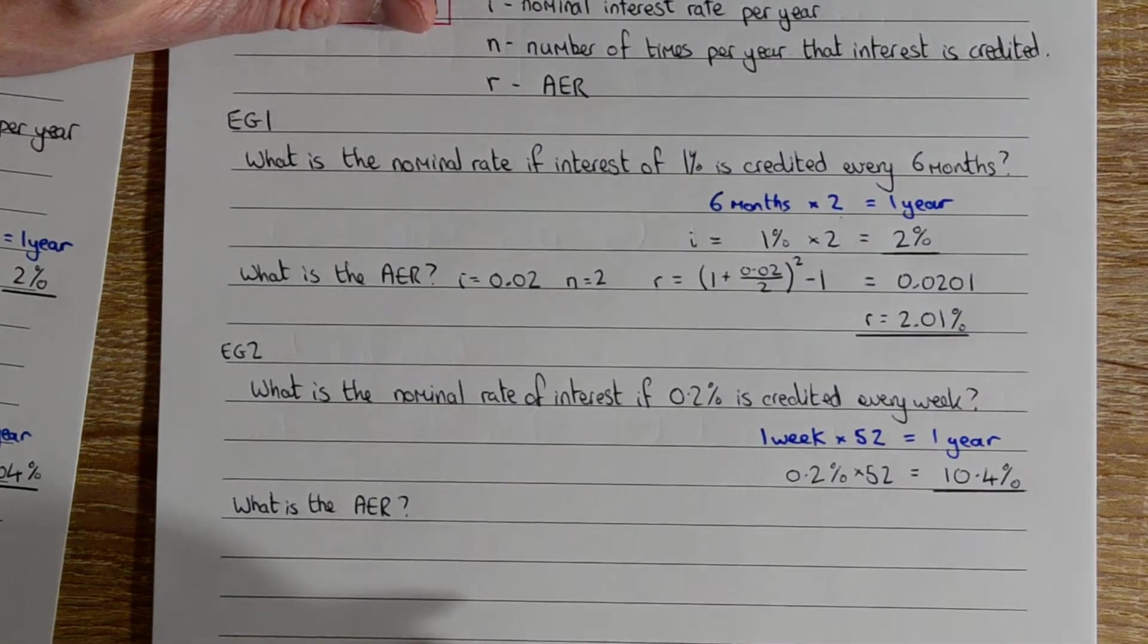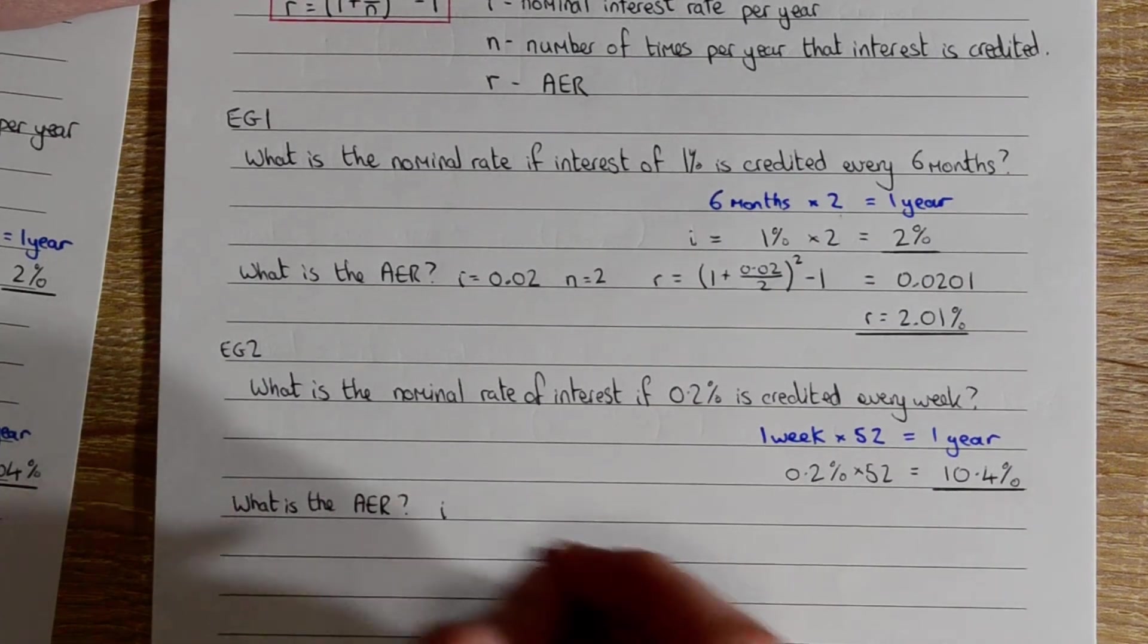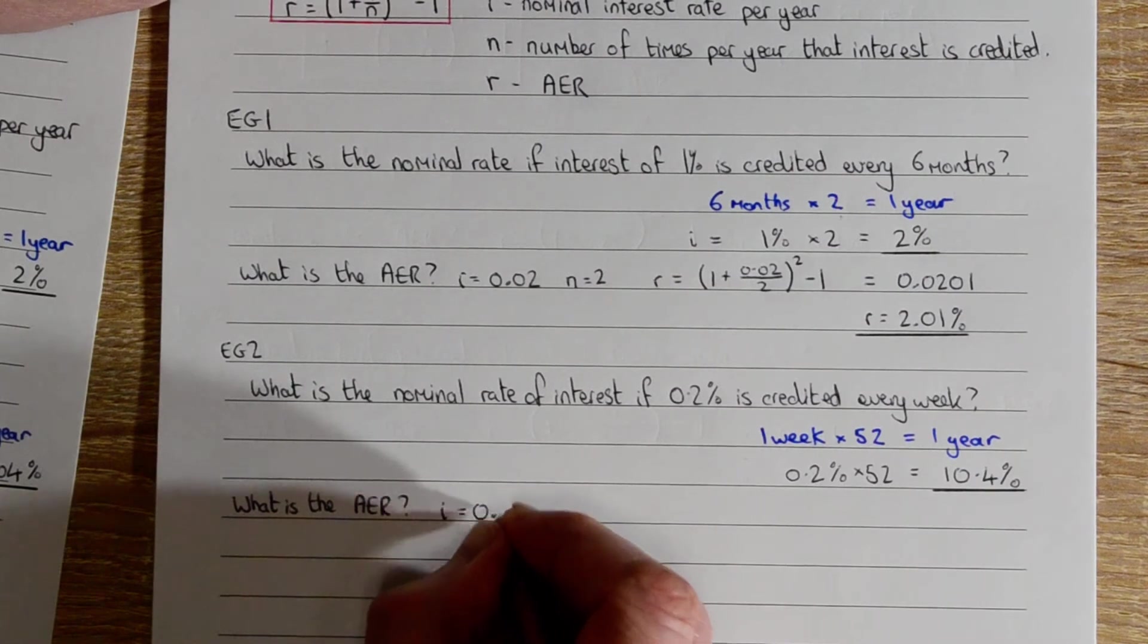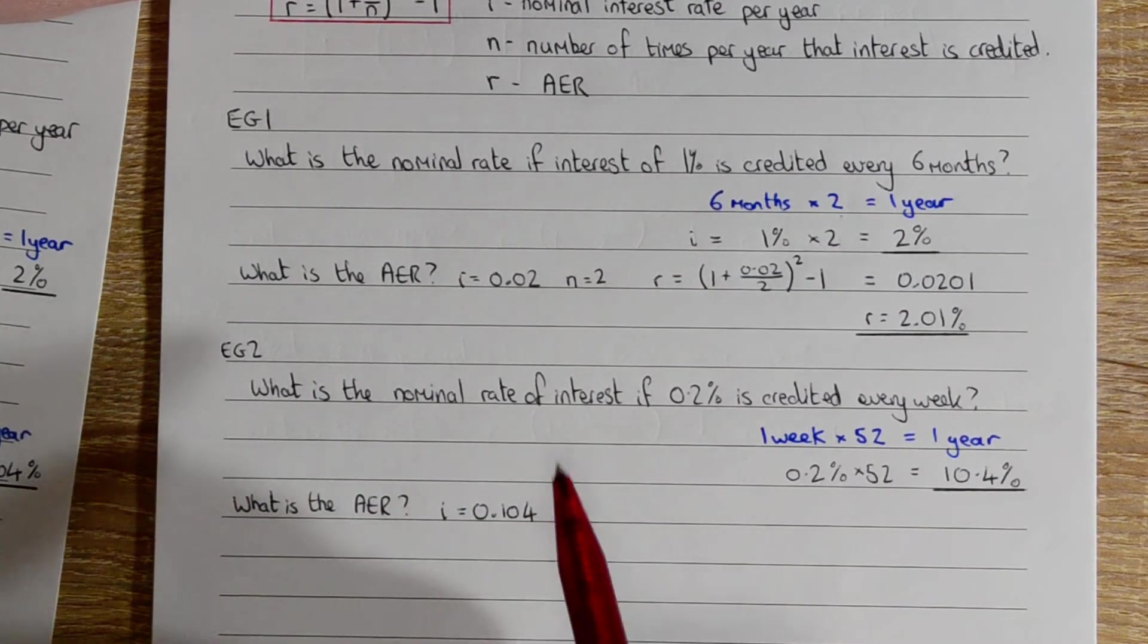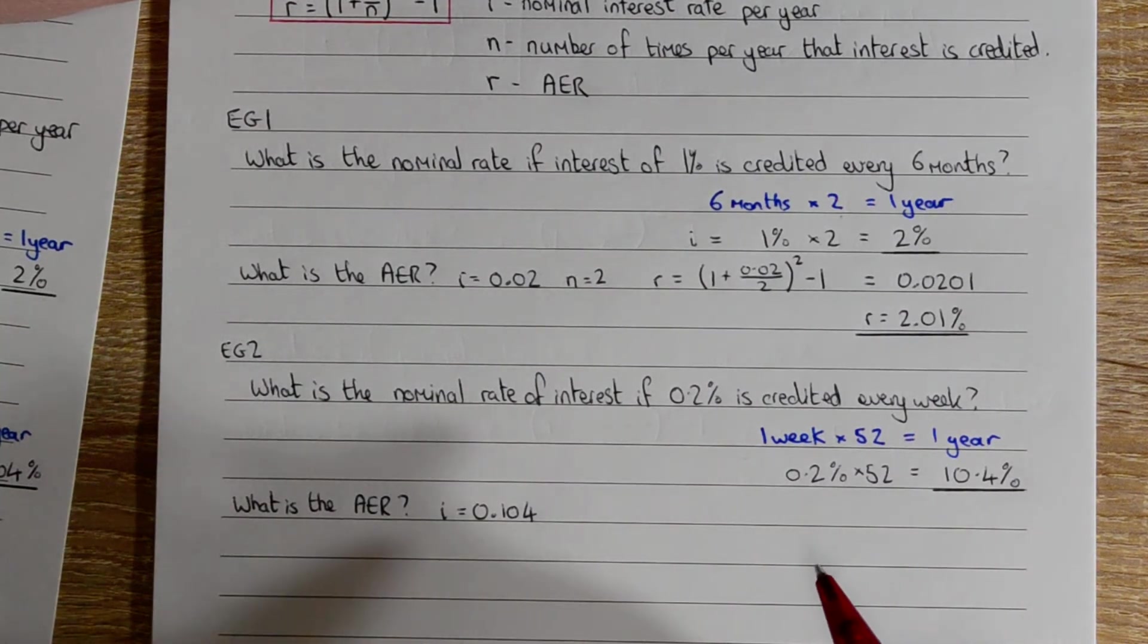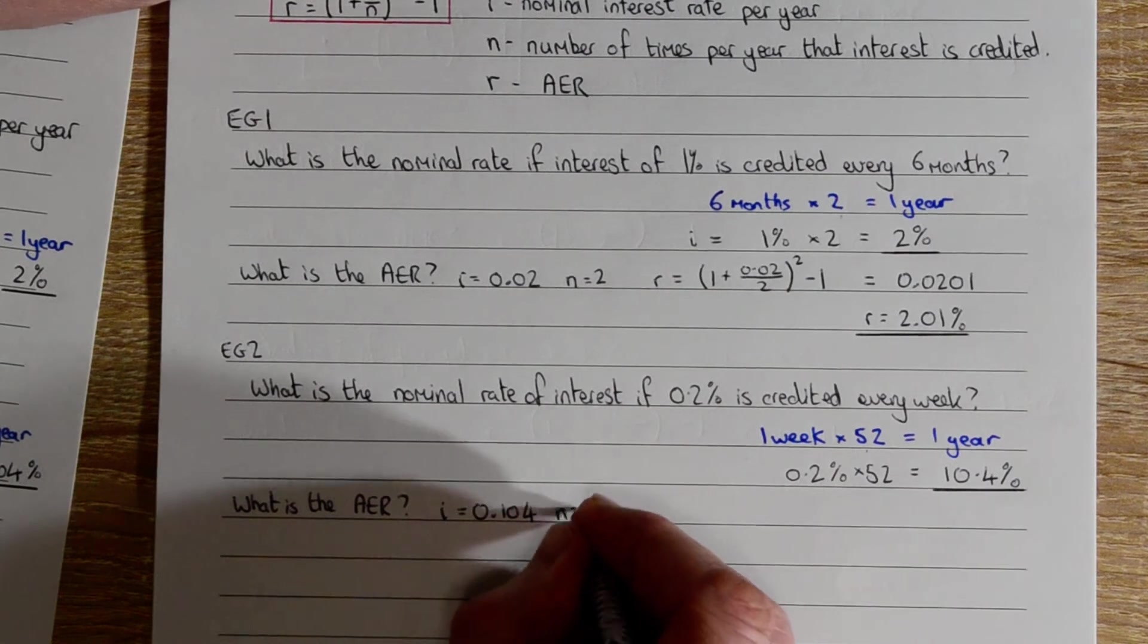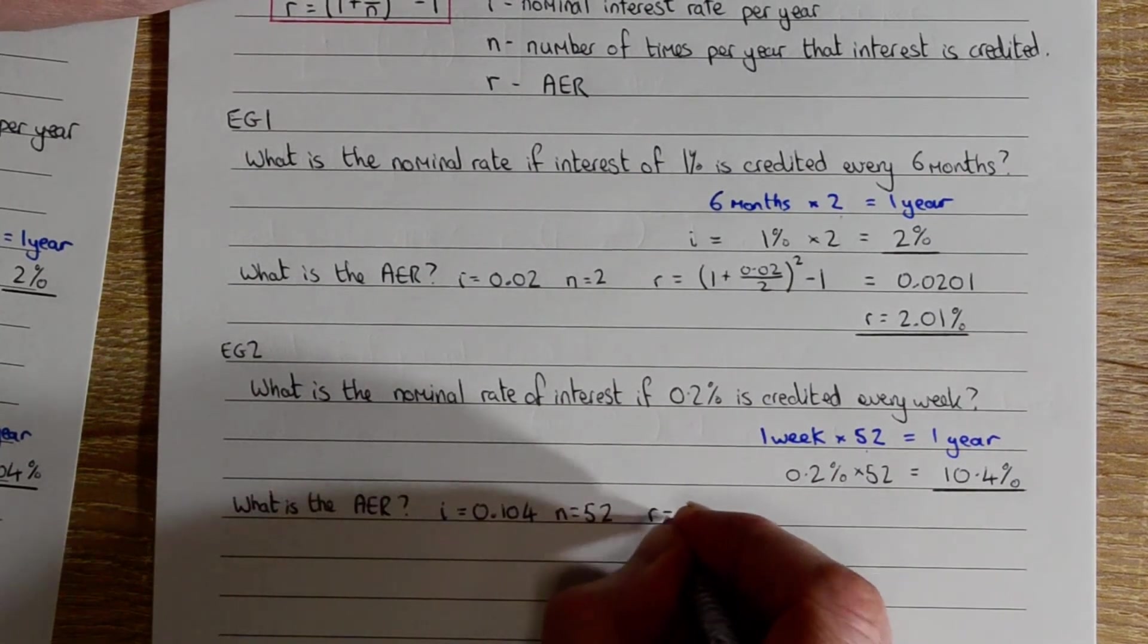Going back to example two, what's the AER? Well, again we need to know I. We've worked it out here, so what's that as a decimal? N, how many times per year is interest credited, is this number here: 52.